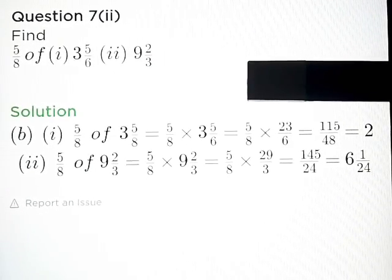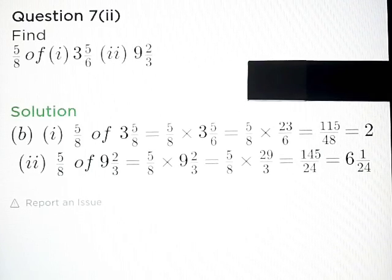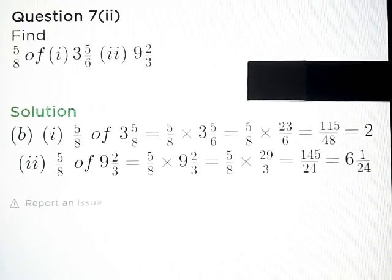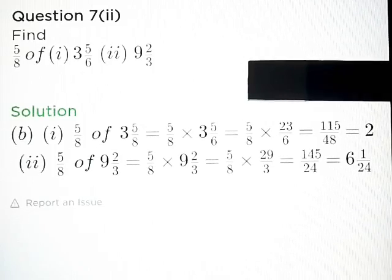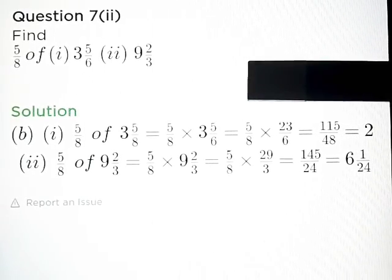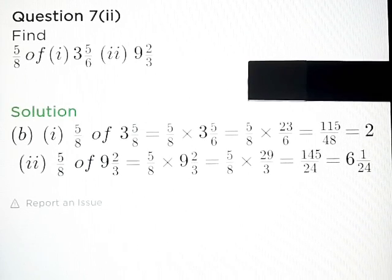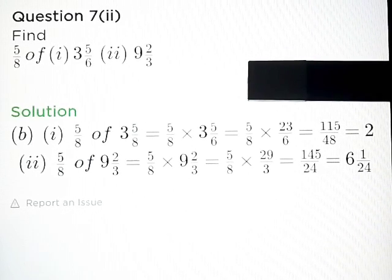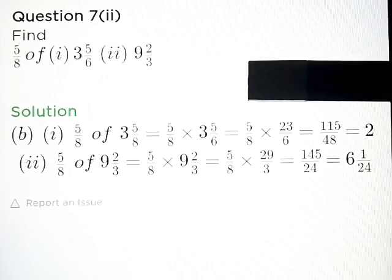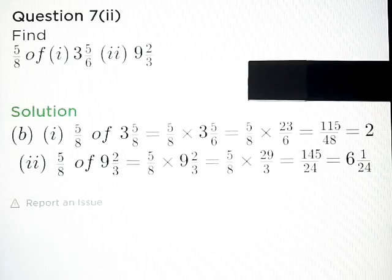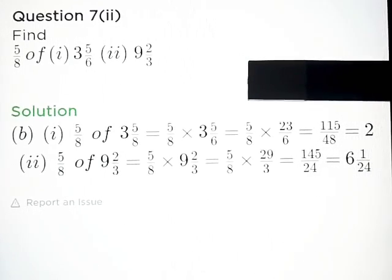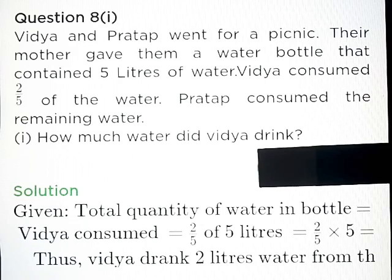Part B: 5 by 8 of Part A: 3 and 5 upon 6, and Part B: 9 and 2 upon 3. Answer Part A: 2, and Part B: 145 upon 24, or 6 and 1 upon 24.